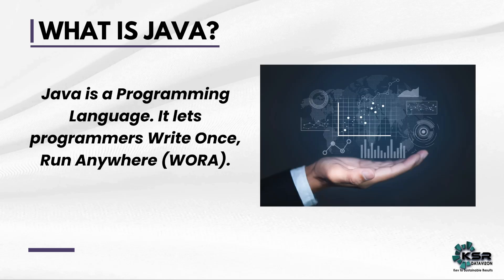So let's see what is Java. Java is a programming language. The way we understand each other is through language — English, Hindi, Tamil. Similarly, if we need a machine to understand us, we have programming languages, and Java is one such programming language. Java is also called WORA, which stands for Write Once and Run Anywhere. We will be discussing this in more detail soon.